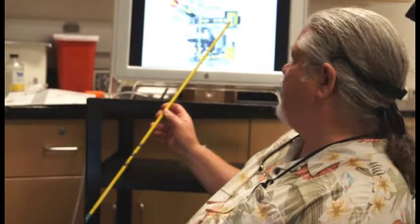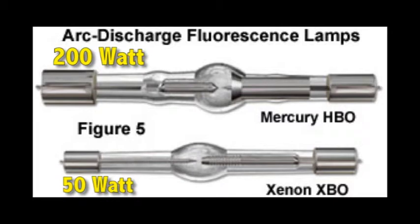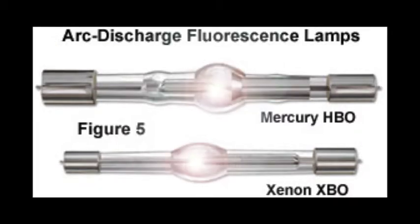The lamp in this lamp house typically is called an HBO lamp, a high pressure mercury lamp. And you can see two examples of mercury burners here. This is a 50 watt mercury burner and a 200 watt mercury burner. And what happens is there is an arc that is formed across these two electrodes, a very bright arc, and so a lot of illumination is pumped out by these bulbs.